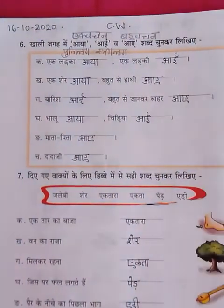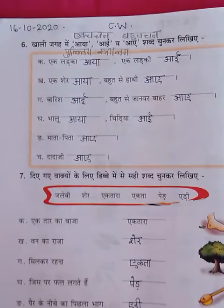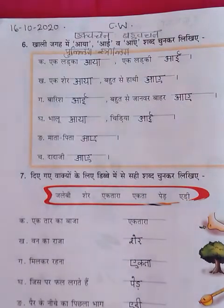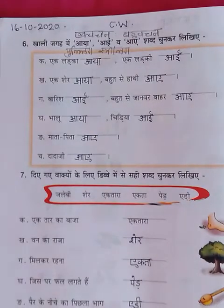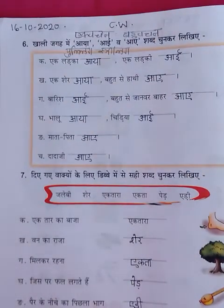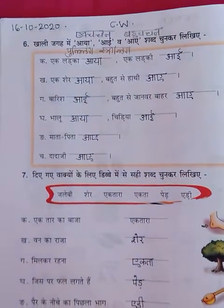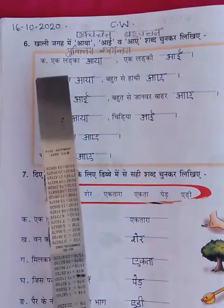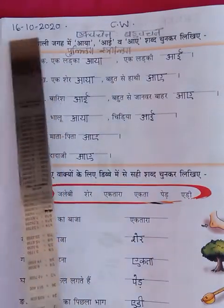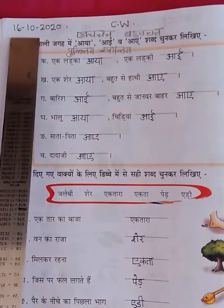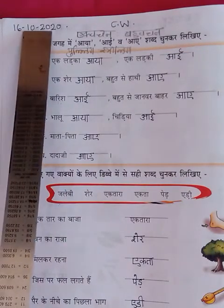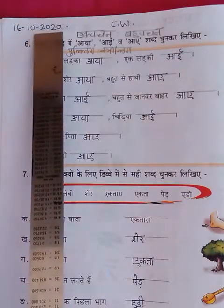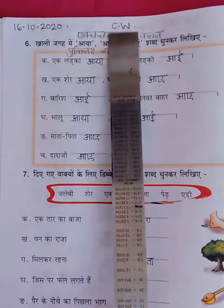I request you all to take out your Bhasha Abhyas book, pencil, and eraser, and open page number 36. Are you ready? Let's start. First of all, you will have to write today's date — 16-10-2020 — and the heading CW.